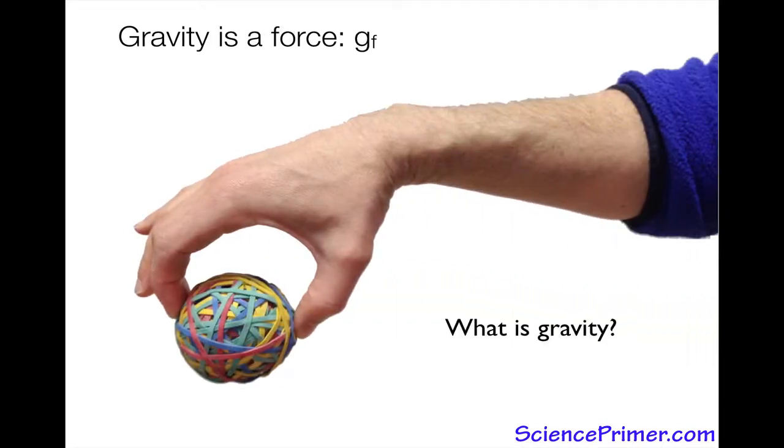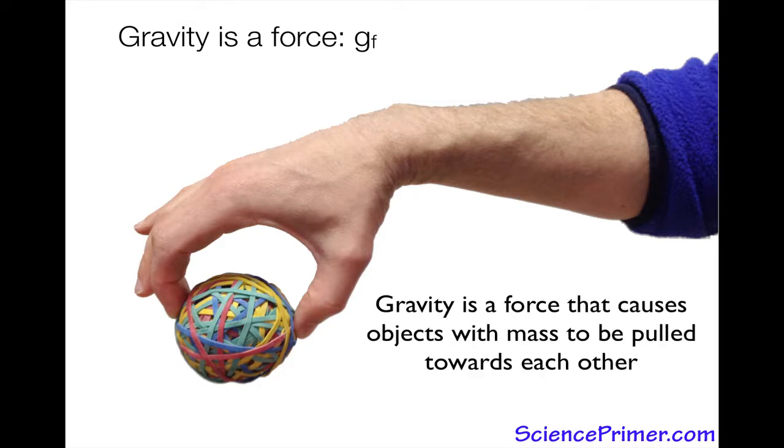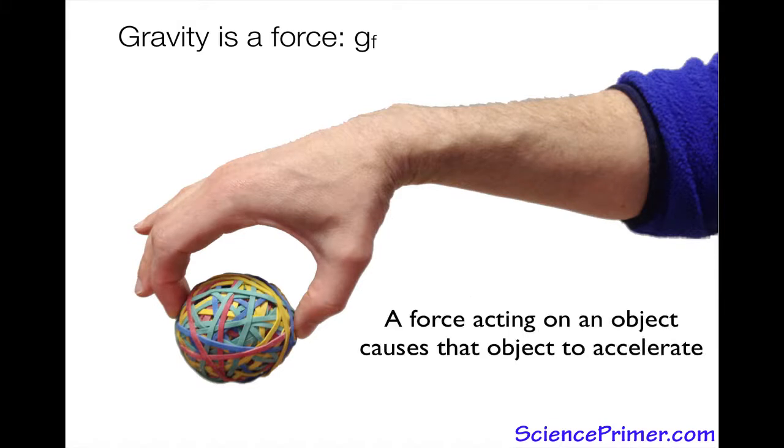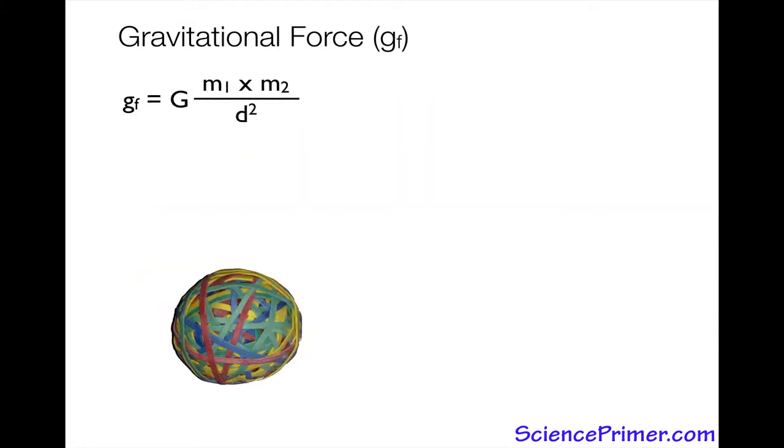But what is gravity really? Described as a force, gravitational force, it is a force that causes objects with mass to be pulled towards each other. The formal description of gravity comes from this equation, which says that gravitational force equals a constant G, which is the gravitational constant, times the mass of the two objects that are being attracted to each other, divided by the square of the distance between them.